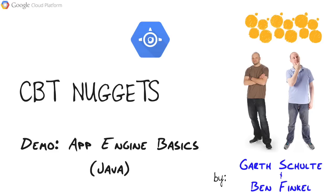Demonstration Nugget: App Engine Basics for Java. In this nugget, we're going to get familiar with the Achievedit sample application we're going to be building together throughout this course. We'll head over to our development environment, get it up and running inside of Eclipse, give you a tour of both the structure and the application itself, work with it locally using the Google plugin and SDK command line tools, then deploy it to the cloud and take a look at it in the developer's console.